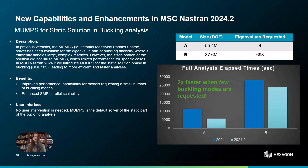In previous versions, we introduced the MAMPS solver — which stands for Multifrontal Massively Parallel Sparse solver — for the eigenvalue part of buckling analysis, where it efficiently handled large complex matrices. However, the static portion of the solution did not utilize MAMPS, which limited performance for specific cases. In MSC Nastran 2024.2, we introduced MAMPS for the static solution phase in buckling, leading to more efficient and faster overall analysis.